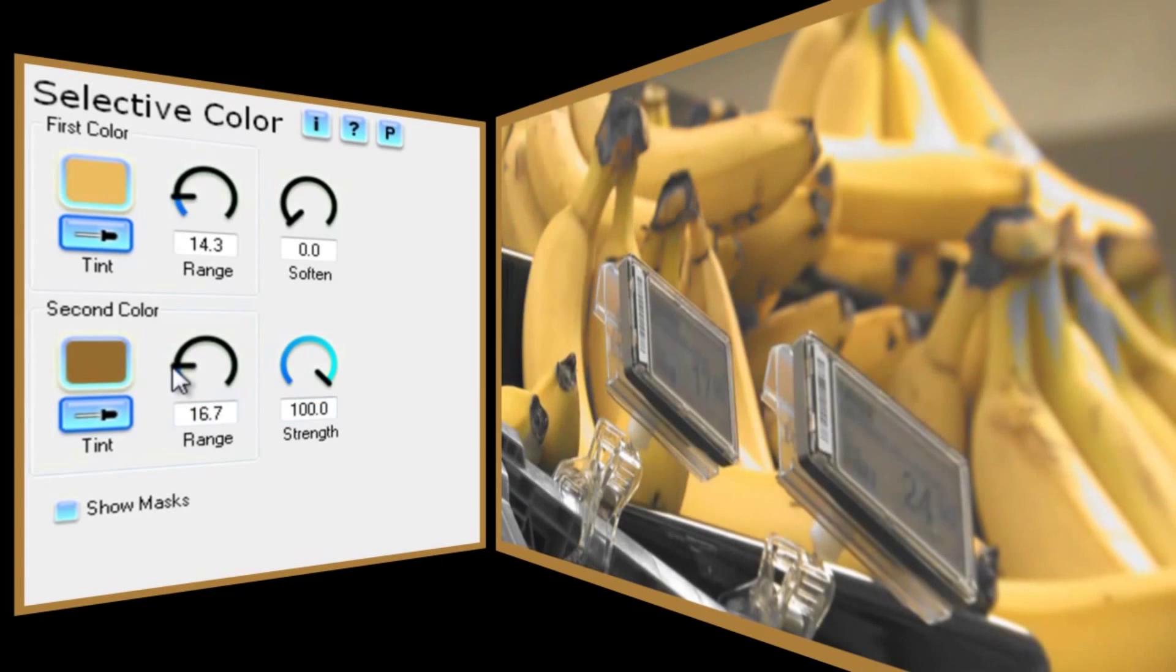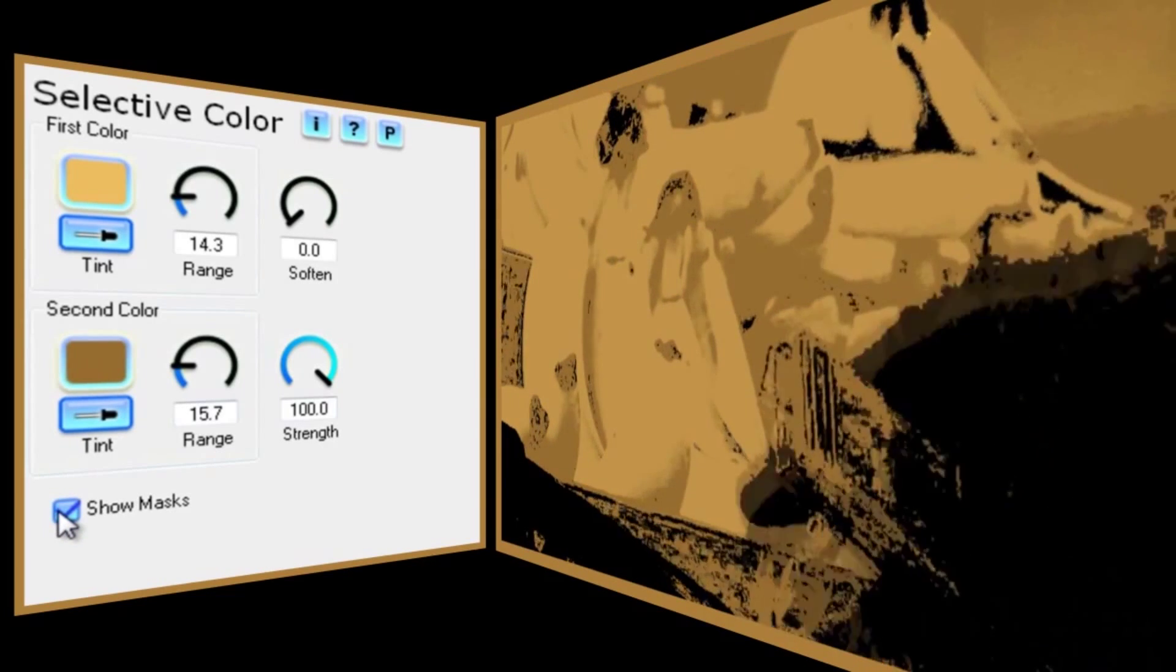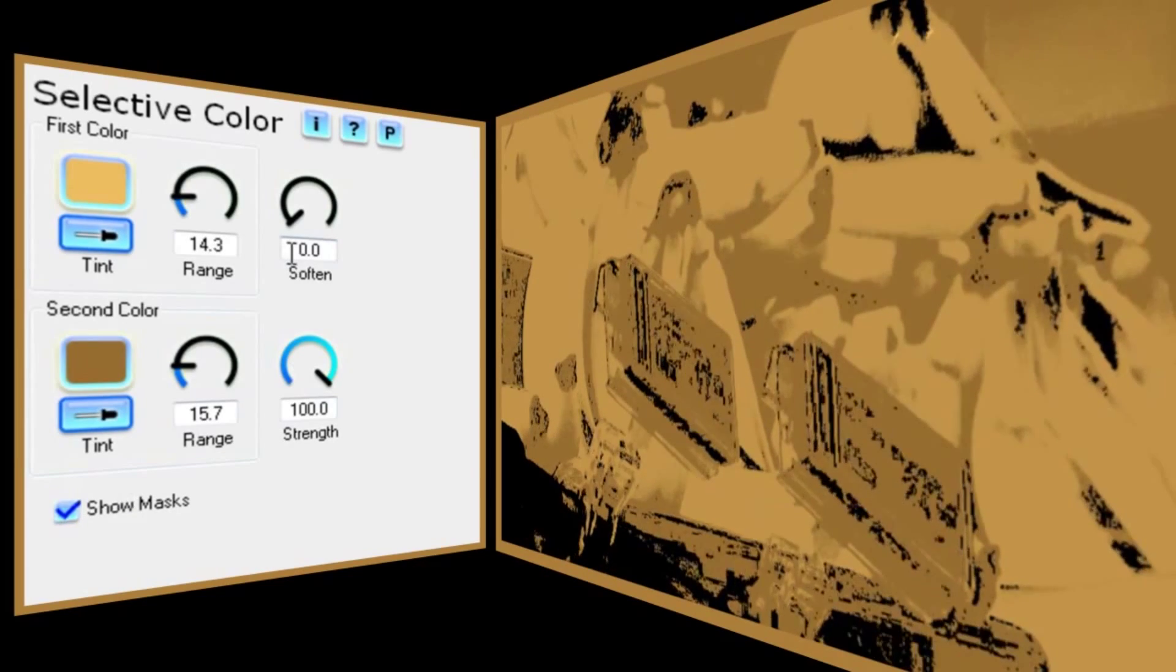Now I can use the Show Masks control to look at precisely which areas are selected. That back wall looks a bit noisy to me and there's some reflection on the plastic cases which I'd like to lose.